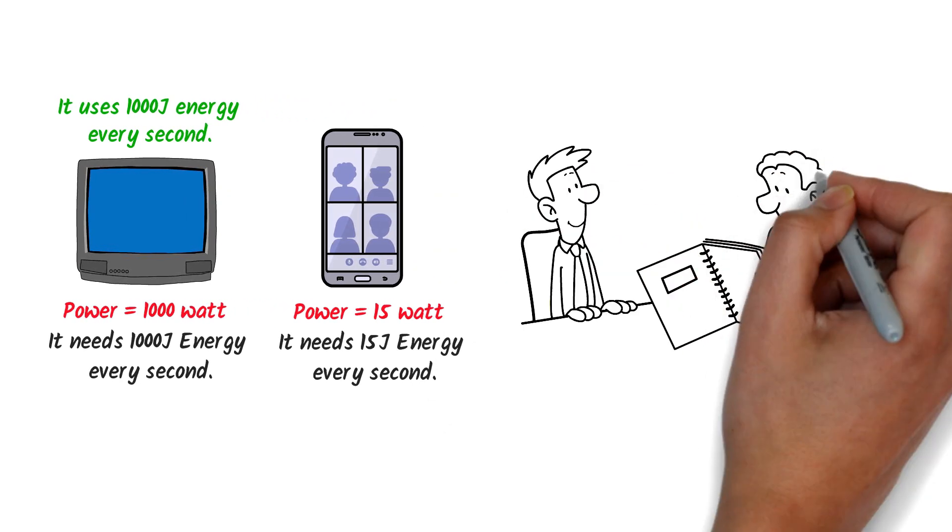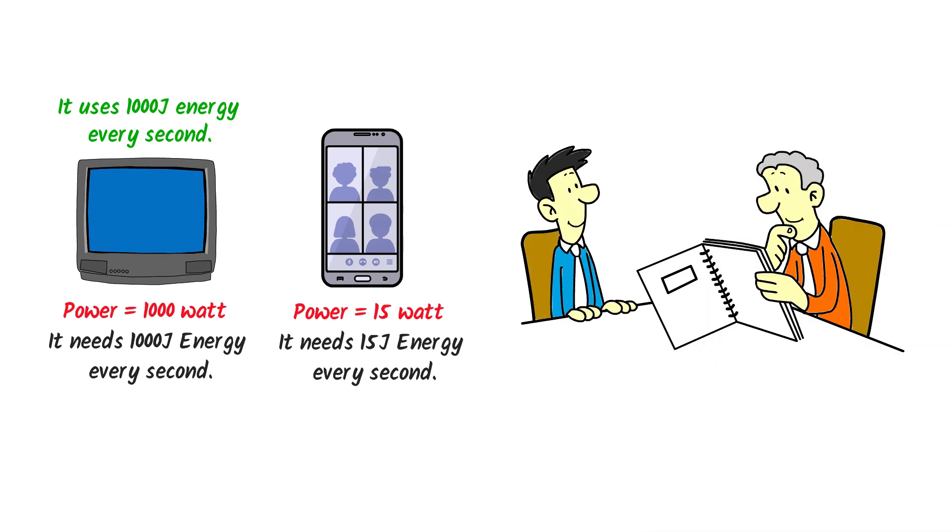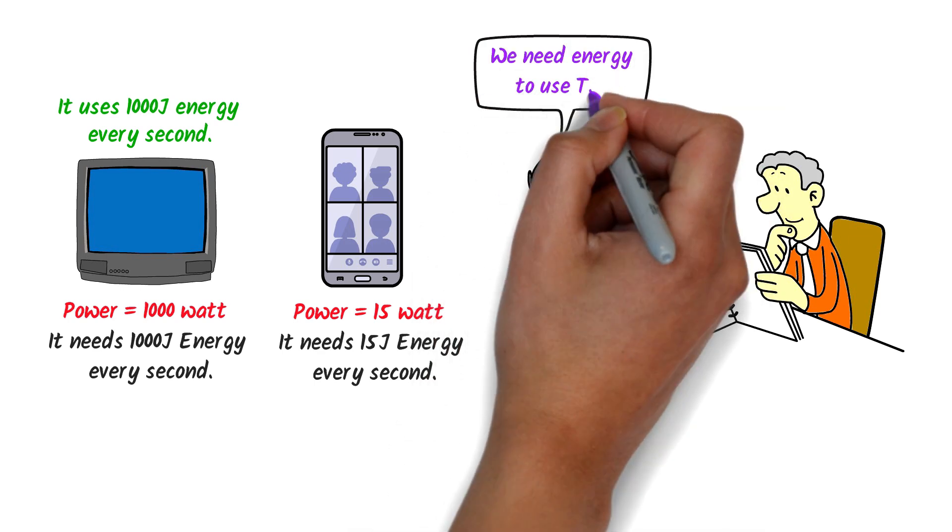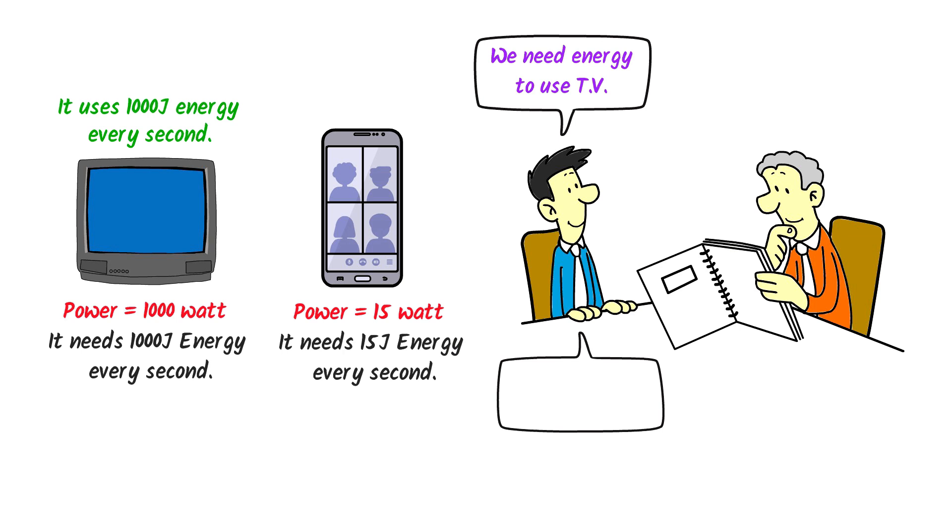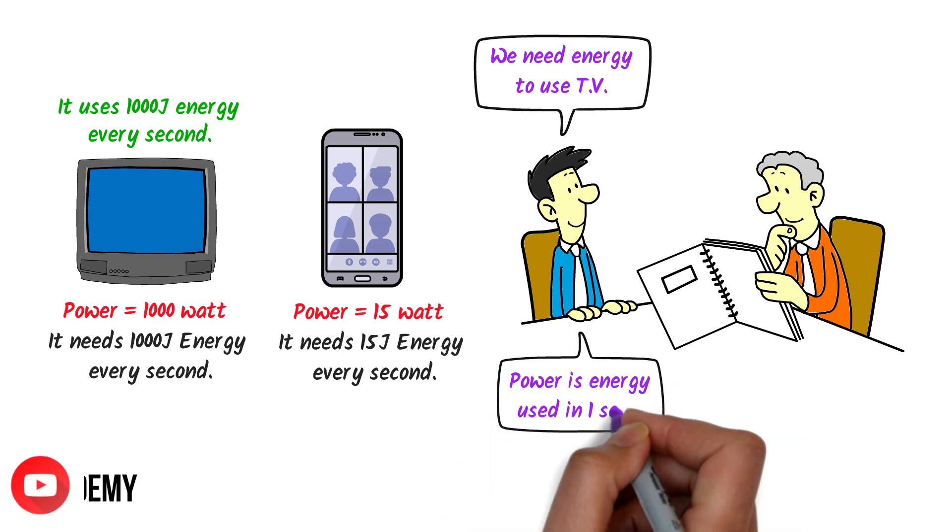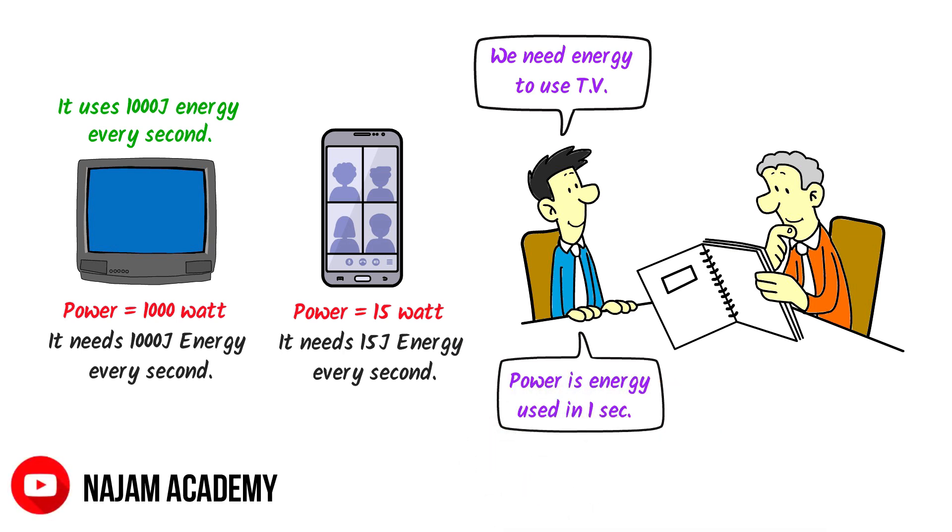Therefore, when someone asks you about daily life example of work and power, you should always answer by stating that we need energy to run any object like TV while power teaches us that how much energy is used by the TV in one second. I hope that you have learned the basic concept of work and power.